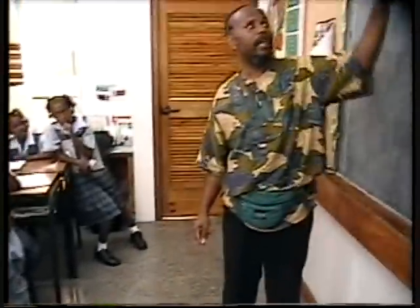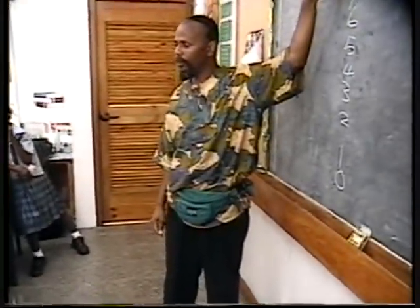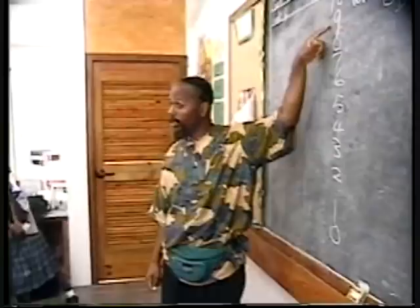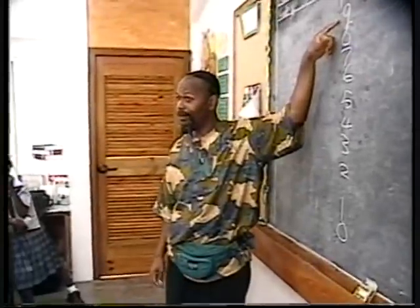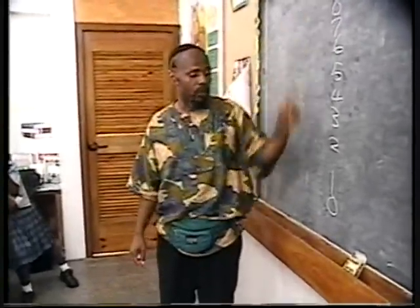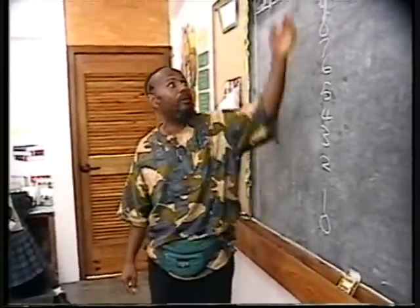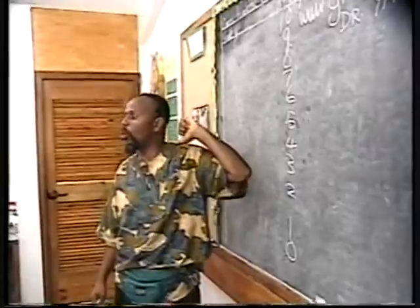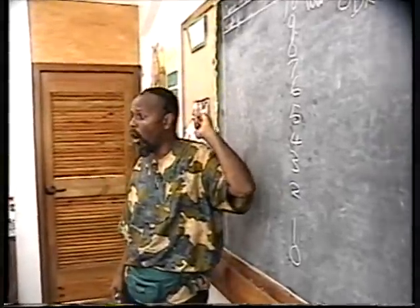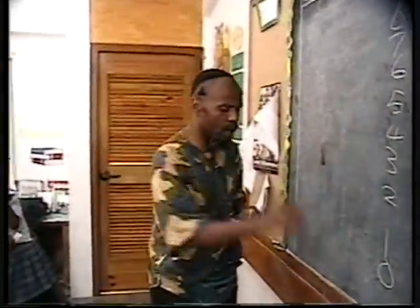From one to nine would be how many numbers? Nine — not ten. Focus. So that is the reason why nine plus the zero number would make the number one-zero, what they call ten.